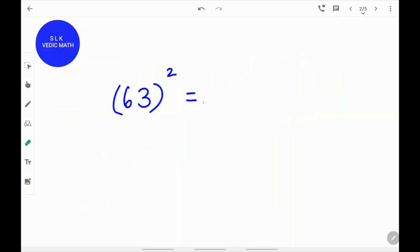Let's try another example. 63 square. First, find the difference of 63 from 50. The difference is 13. Next, add 25 plus 13. 25 plus 13 is 38. Write 38.